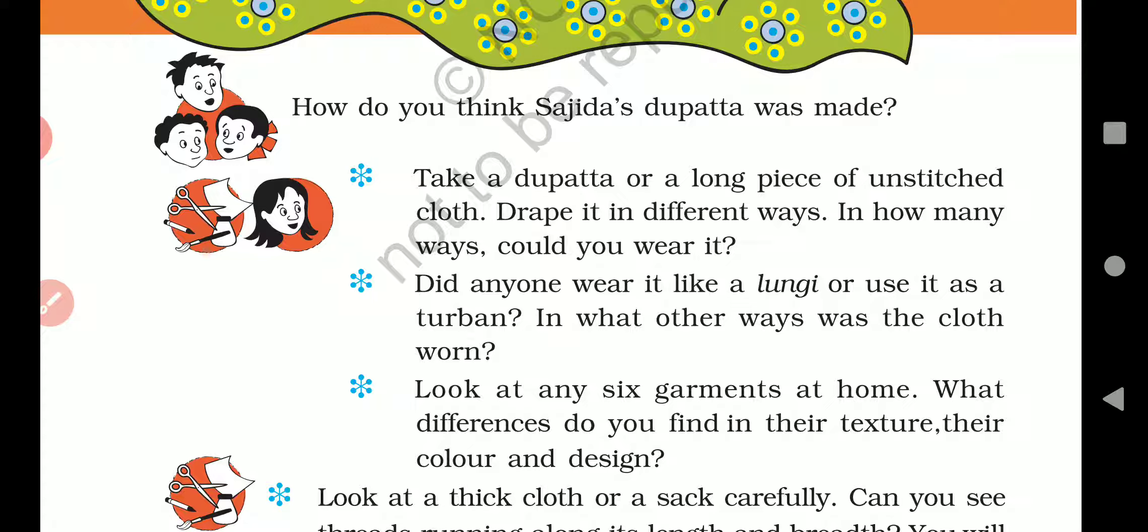Next, look at any six garments at home. You have to look at any six garments, clothes, at home. What differences do you find in their texture, their color, and design? When you look at those clothes, you have to notice their texture - meaning what type of cloth it is, soft, rough, or smooth. You have to notice what the cloth is like, whether it's soft cloth or rough cloth. And also notice the color and design.